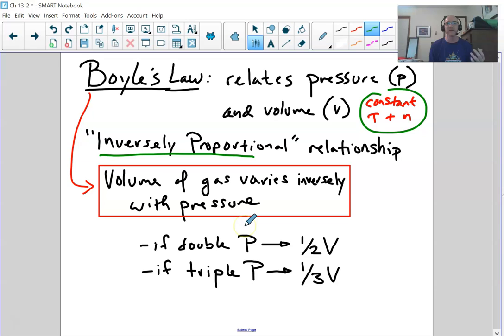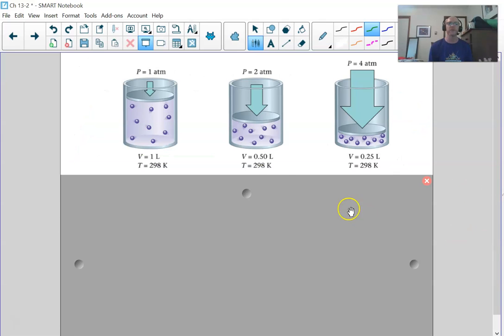Because it varies inversely, if you double the pressure, you're going to half the volume of a gas. If you triple the pressure, it's one third of the volume. Here's a cartoon version. Notice we start with one liter of gas at 298 Kelvin at one atmosphere of pressure. If we double the atmospheric pressure, it's one half the volume, 0.5 liters. If we quadruple the atmospheric pressure, it's one quarter the volume. Inverse relationship.